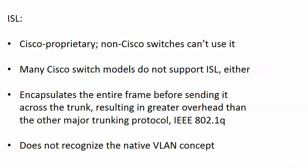One big reason for ISL not being particularly popular is the amount of overhead — it encapsulates the entire frame before sending it across the trunk. Compared to the other major trunking protocol, IEEE 802.1Q, which doesn't do anything like that, you have much greater overhead with ISL. Also, ISL does not recognize the concept of the native VLAN, which I'm going to clear up in about 20 seconds. But right now, we're going to talk about 802.1Q.